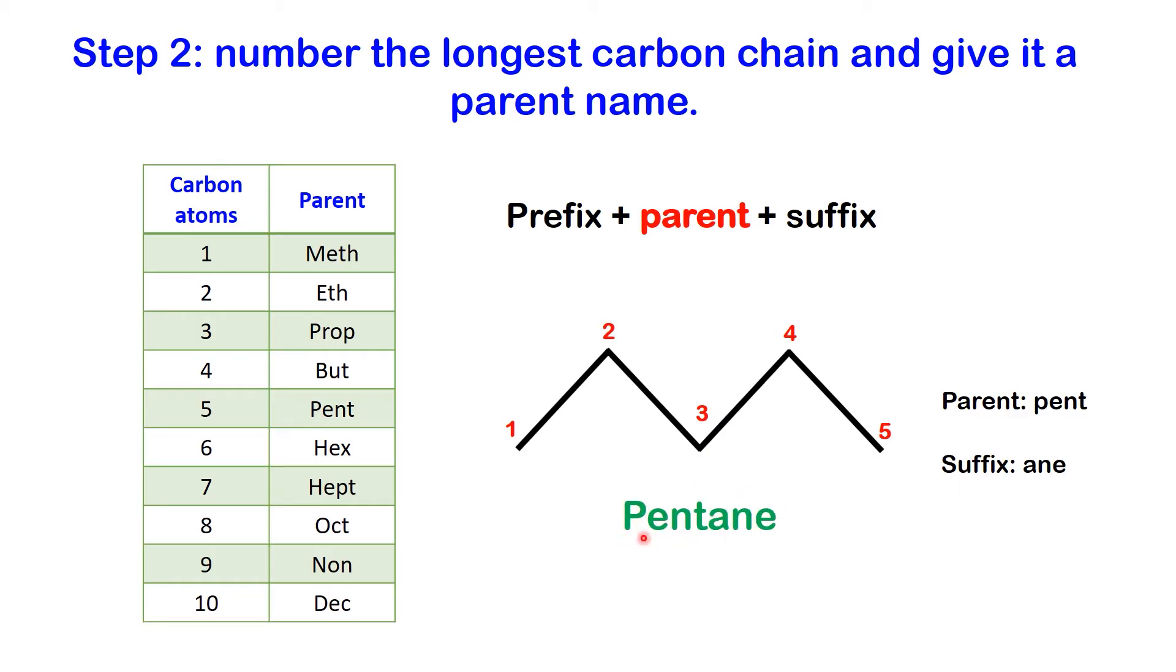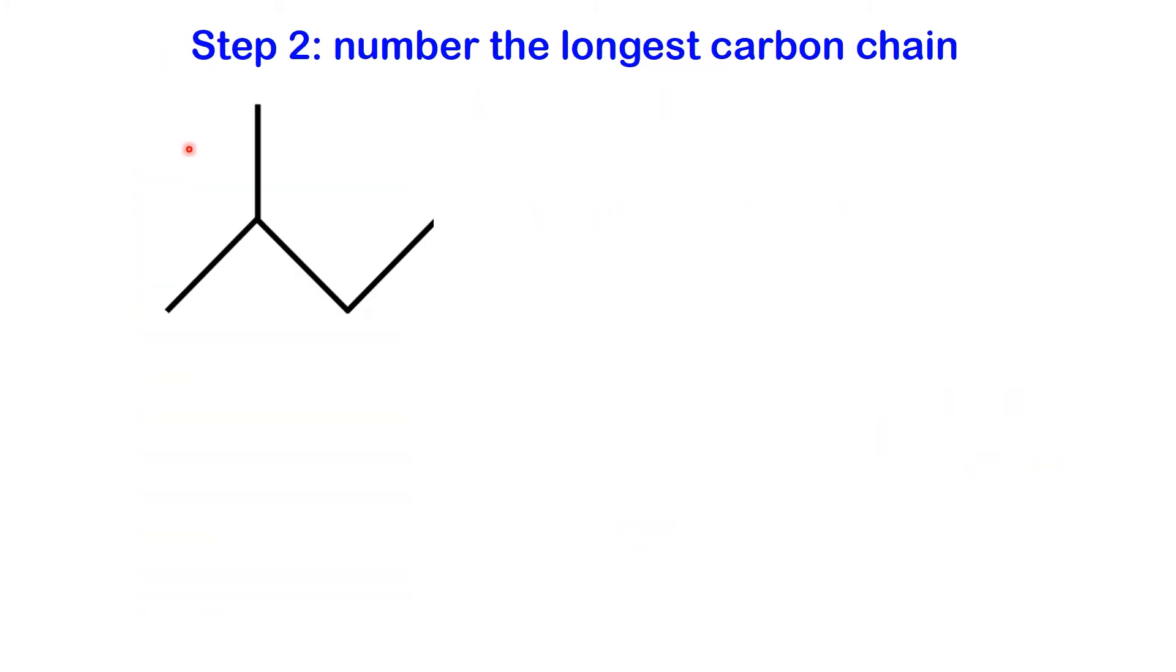Consider another example. This molecule is a branched alkane. A branched alkane has a side chain or branch, also known as a substituent. When numbering the longest chain in a branched alkane, it's essential to assign the lower number to the first substituent. In this case we have four carbon atoms in the chain and the substituent is on carbon two.